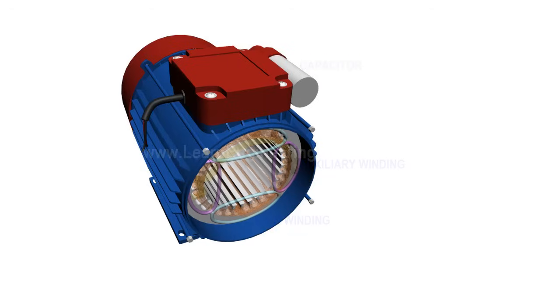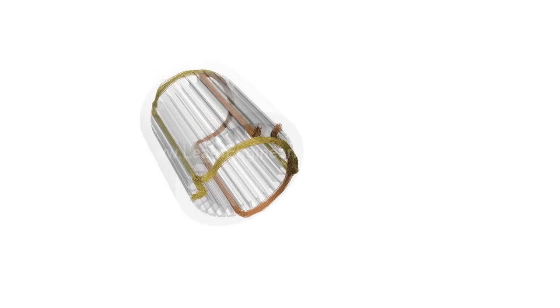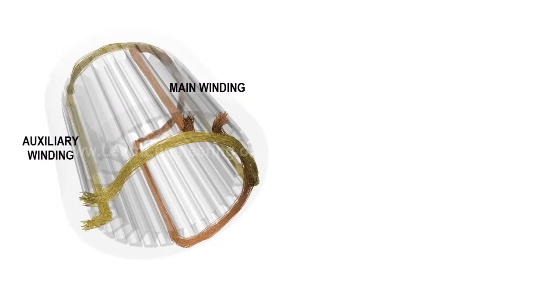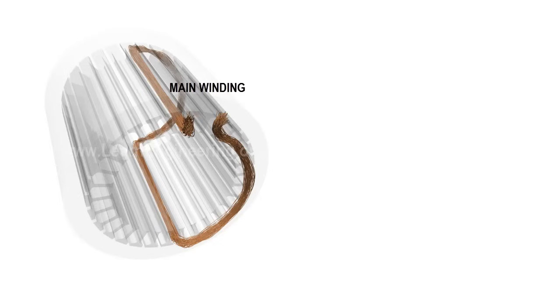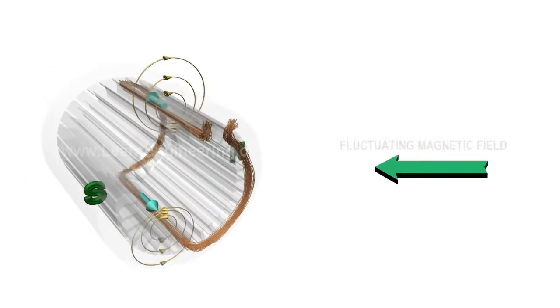Let's assume there is only one coil in main and auxiliary winding. To understand its working better, assume no current is flowing through auxiliary winding. AC current passing through main winding will produce a fluctuating magnetic field.